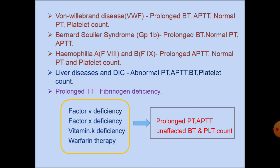In this condition, there is deficiency of glycoprotein 1b, which is a receptor for von Willebrand factor. Hence, platelets do not aggregate and bleeding time is prolonged. There is prolonged bleeding time with normal PT and APTT.